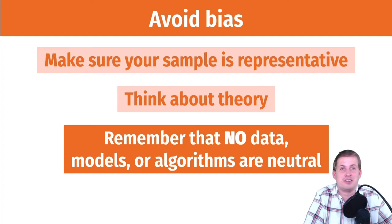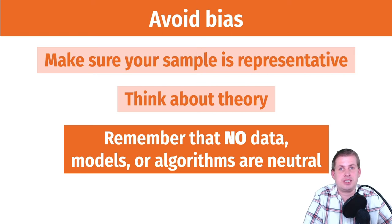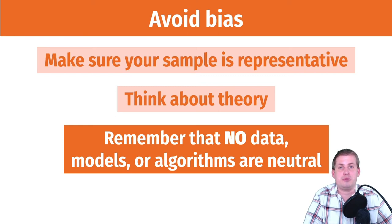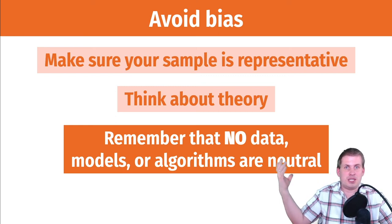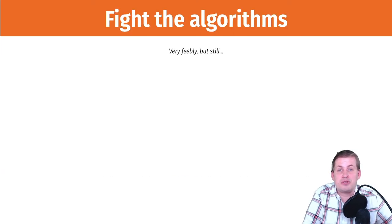Remember that no data, no models, no algorithms are neutral — they all have bias built in from the humans who collected them. Even an 'objective' dataset from the World Bank or J-PAL was collected by someone who chose which columns to measure and how to analyze them, which can build bias into the results. You're working with data about people, so be careful not to feed into automated inequality and racial or sexist bias.